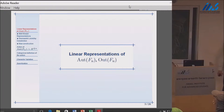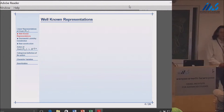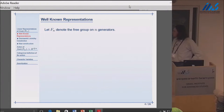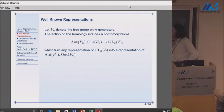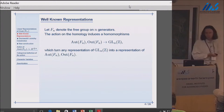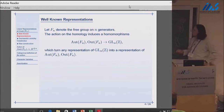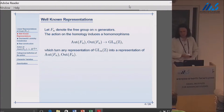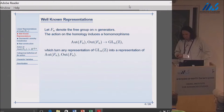Let's start with representations of the automorphism group of the free group. In some sense there are not that many representations which are known. If you start with the free group, you can take its abelianization, which is the free abelian group, and any automorphism of the free group will induce an automorphism of the abelianization. So you get a map into GL(n,Z), and from there you can take any GL(n) representation and turn it into a representation of Aut(F_n). But this is not really a feasible way to understand the representation theory because you're missing representations where the kernel does not act trivially, and the kernel is pretty big.